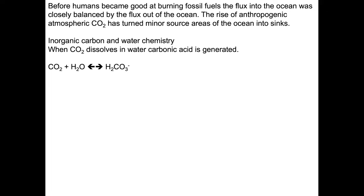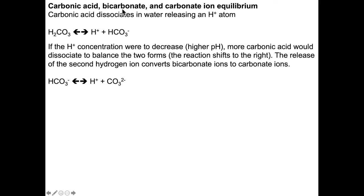Now we'll take a look at inorganic carbon and water chemistry. CO2 dissolves in the water and generates carbonic acid. Atmospheric CO2, sourced by a coal power plant for instance, is going to combine with water vapor and the net result is carbonic acid that makes up a component of the rainfall. When we talk about carbonic acid, we need to consider bicarbonate and carbonate ion equilibrium as well. The carbonic acid dissociates in water releasing a hydronium ion as a positively charged hydrogen atom.